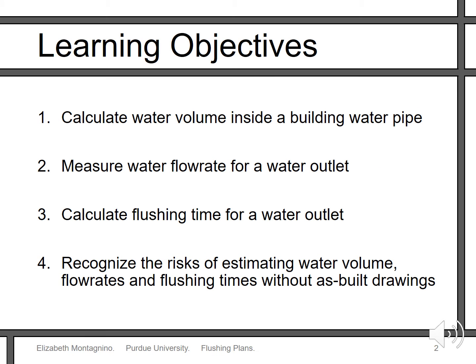There are four learning objectives for this video. First, you will learn how to calculate the amount of water that is inside a building water pipe. Next, you will learn how to measure water flow rate. Then you will learn how to calculate the time needed to flush a water outlet. And finally, recognize the risks of estimating these factors without as-built construction drawings.